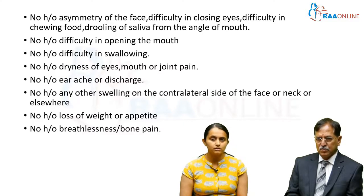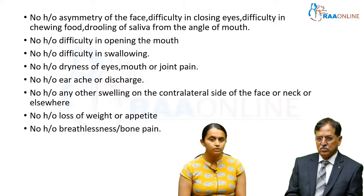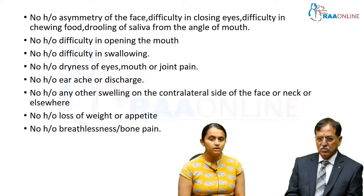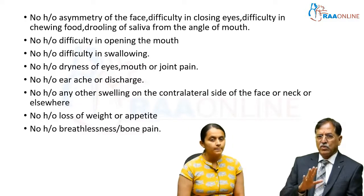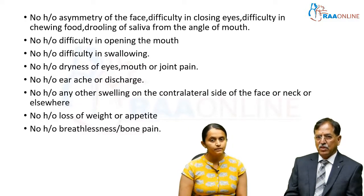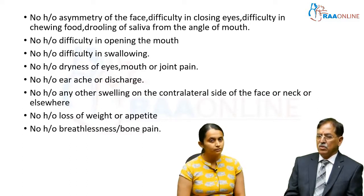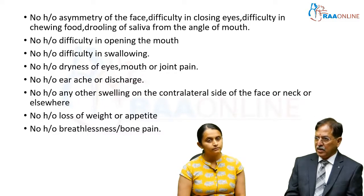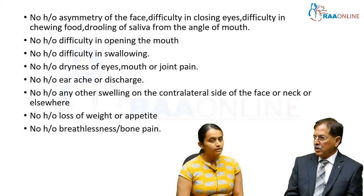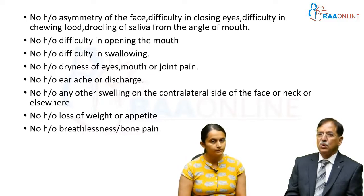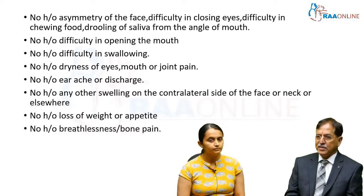No history of asymmetry of the face, difficulty in closing eyes, difficulty in chewing food, drooling of saliva, difficulty in opening the mouth, difficulty in swallowing, dryness of eyes, mouth, or joints, ear ache or discharge, any swelling on the contralateral side, loss of weight or appetite, breathlessness, or bone pain. Why ask about facial asymmetry and difficulty closing eyes? To rule out facial nerve involvement — a malignant parotid tumor can cause lower motor neuron type facial palsy.